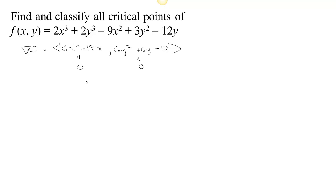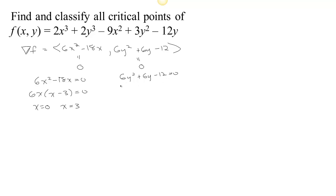We want to figure out where the gradient is 0, because that's where we could have a max or a min. If we factor the first equation, we can pull out a 6x and that leaves behind x minus 3. So either x equals 0 or x equals 3. For the second equation we factor out a 6 and get y squared plus y minus 2, which factors using plus 2 and minus 1, giving y equals negative 2 or y equals 1. Since the x solutions are independent from the y solutions, there are 2 choices for x and 2 choices for y — so 4 critical points total.